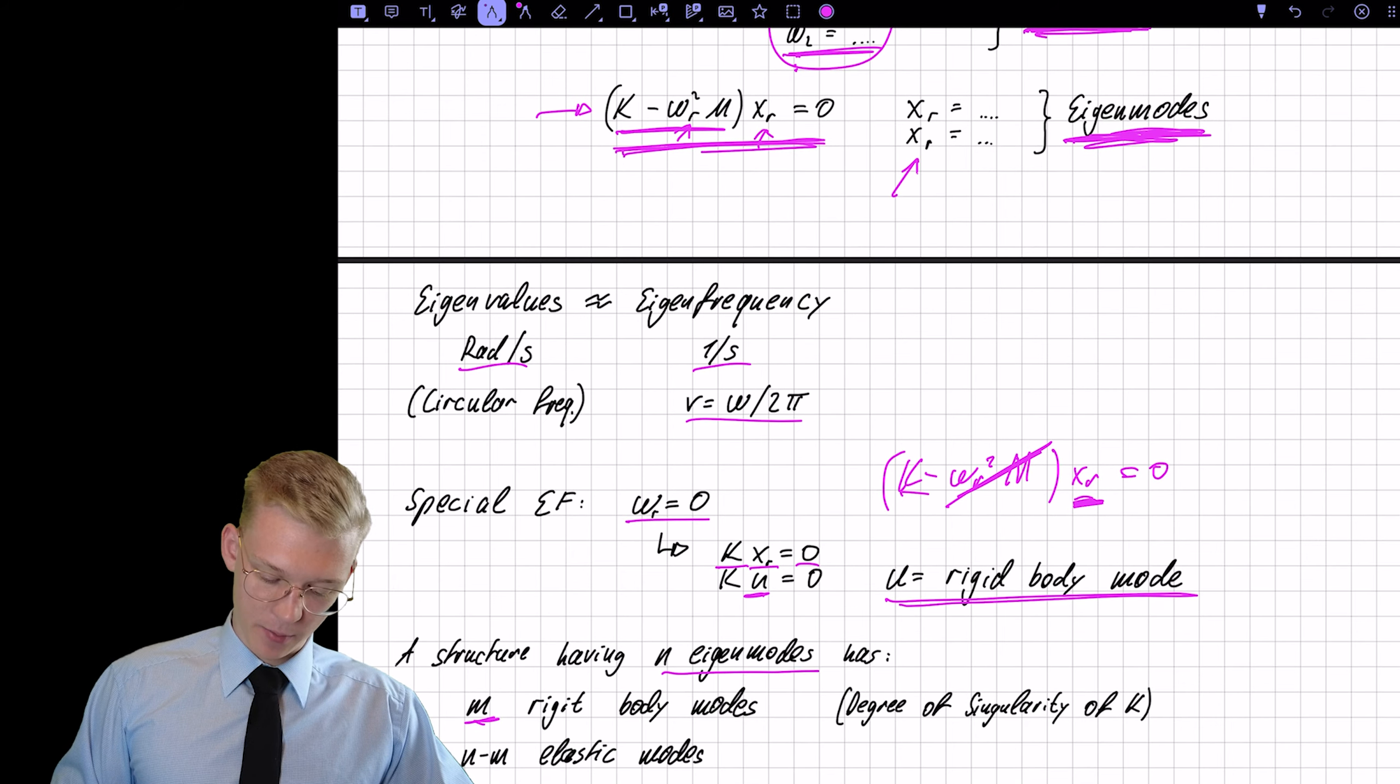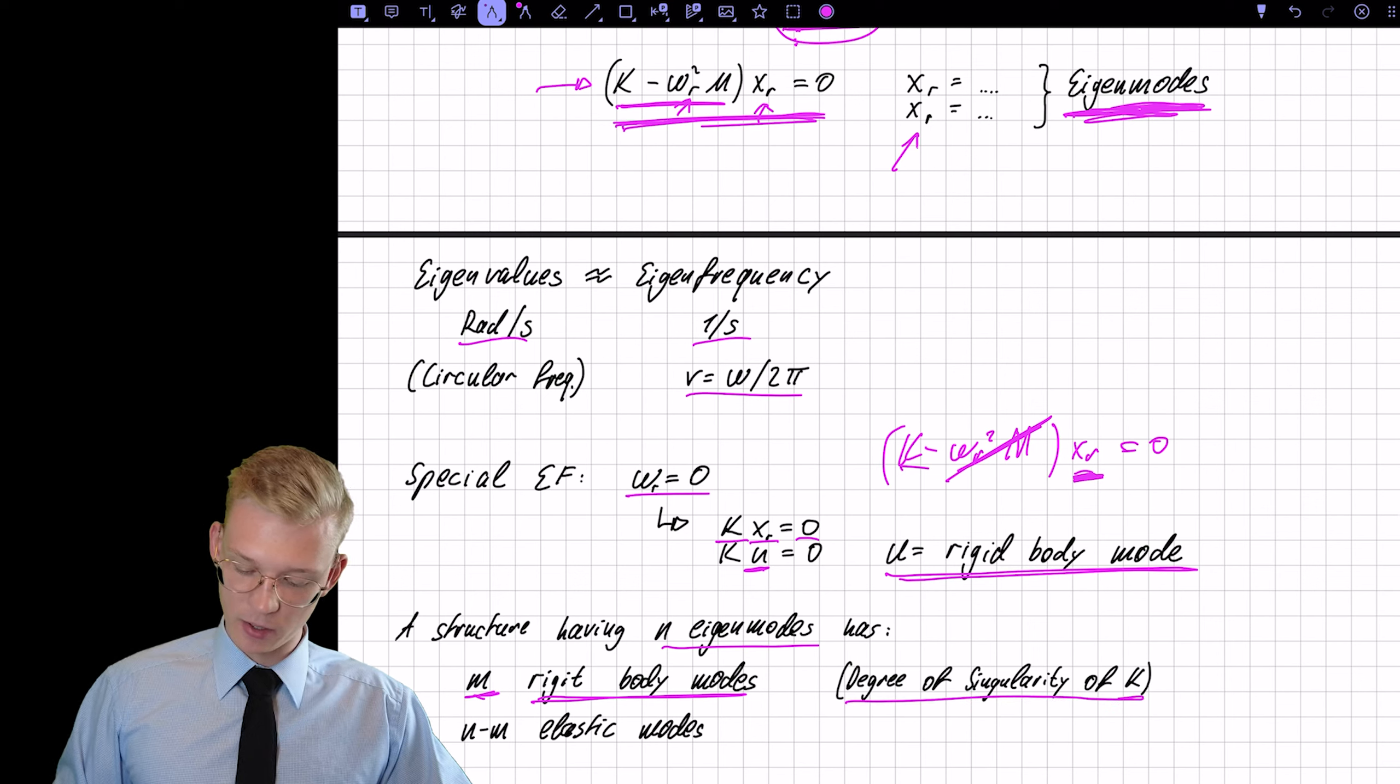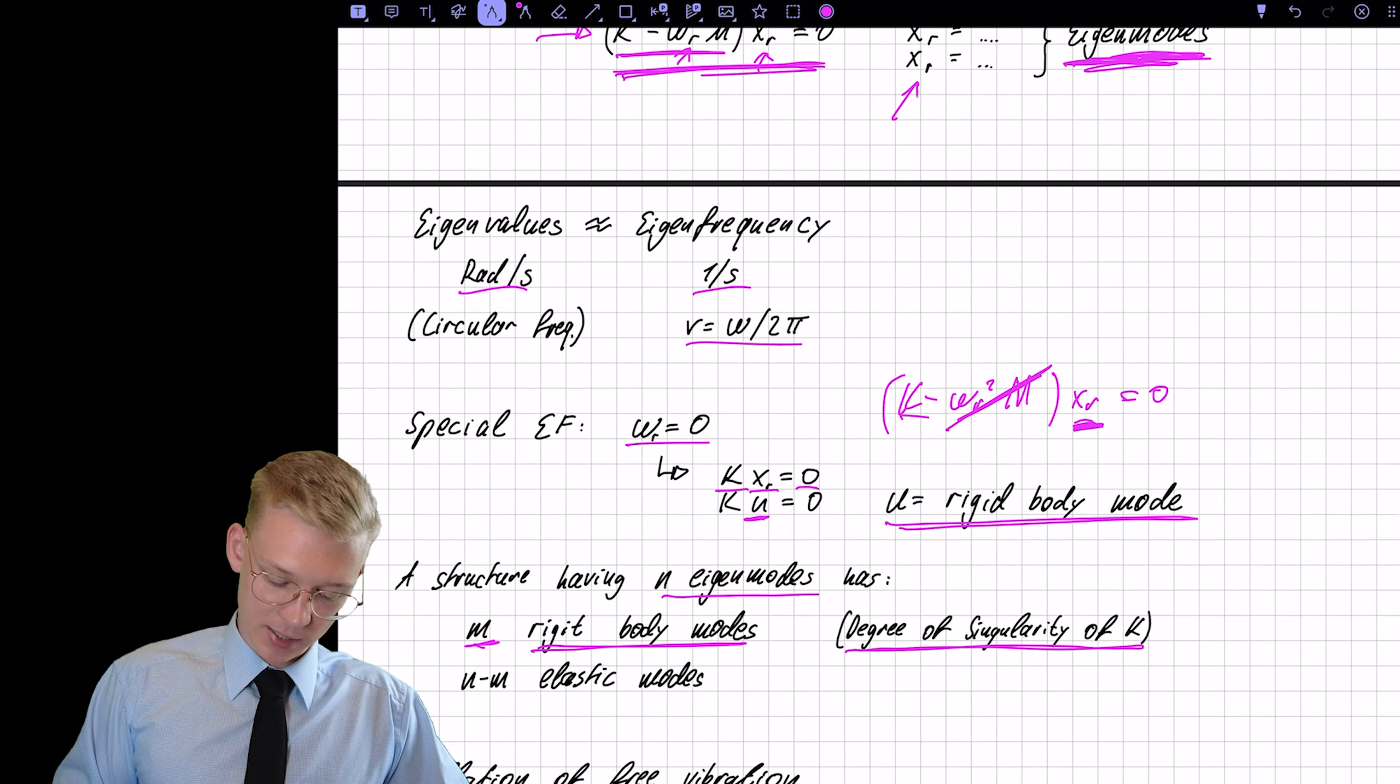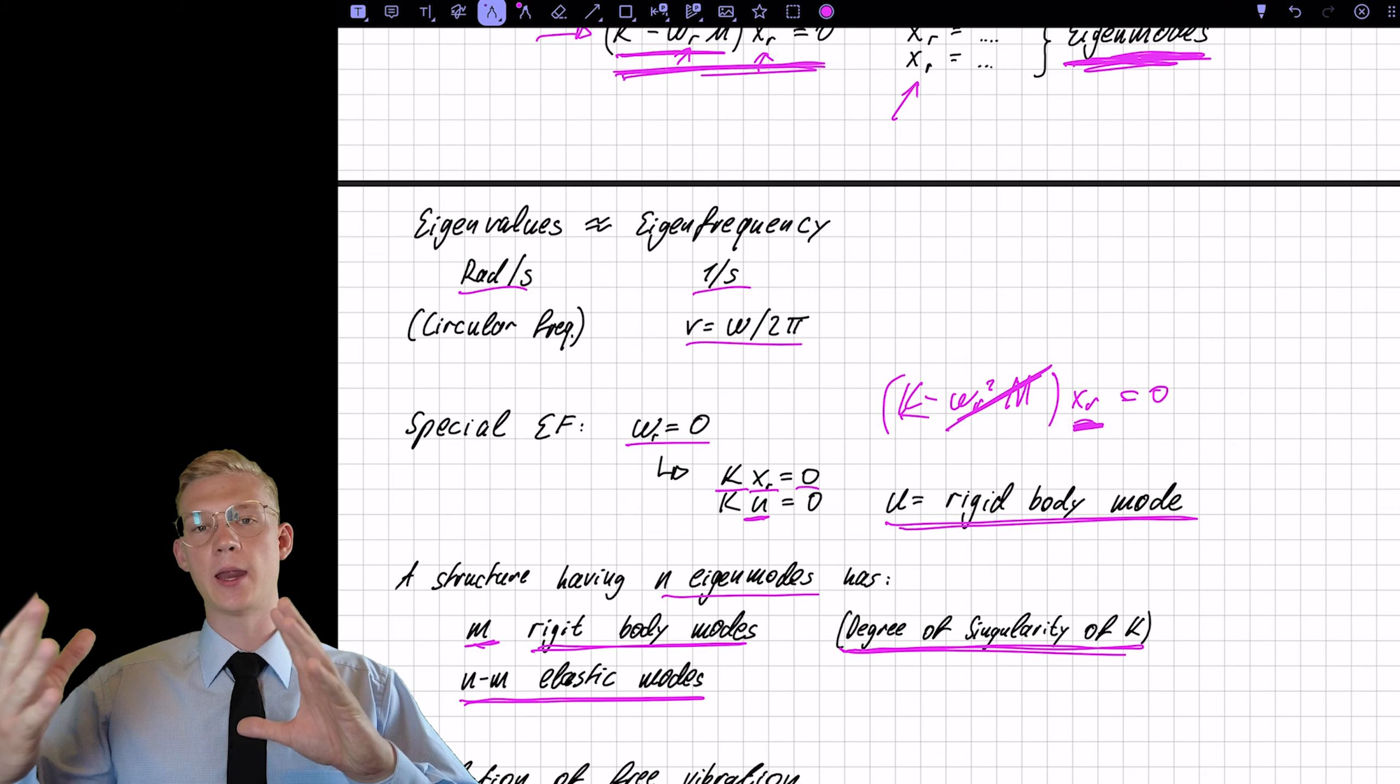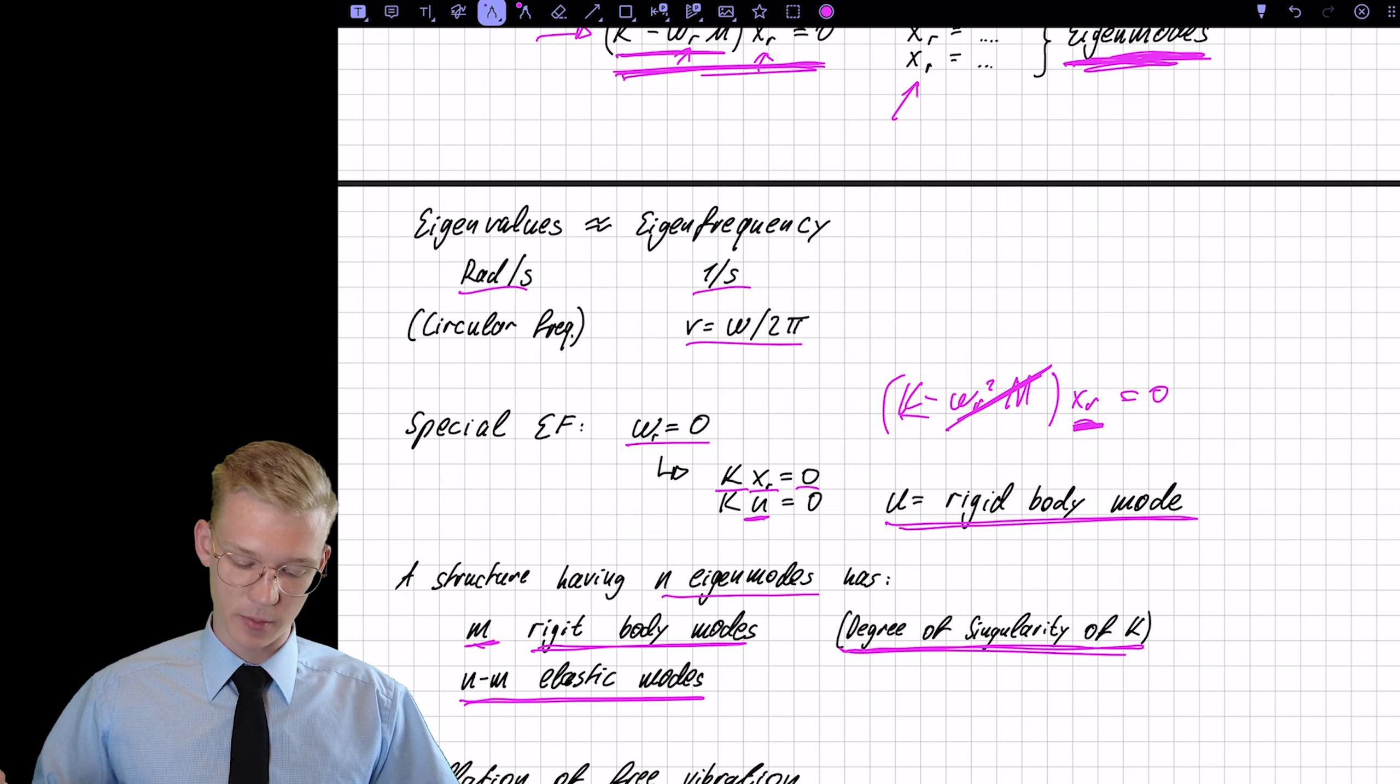So if a structure is having n eigenmodes, it will have m rigid body modes. So this is the degree of singularity of k. So how many eigenvalues of our matrix k are 0 and the rest is elastic body modes. So we can say that if we have a singularity of k, we will have a rigid body mode and all the other rigid modes will be elastic body modes.